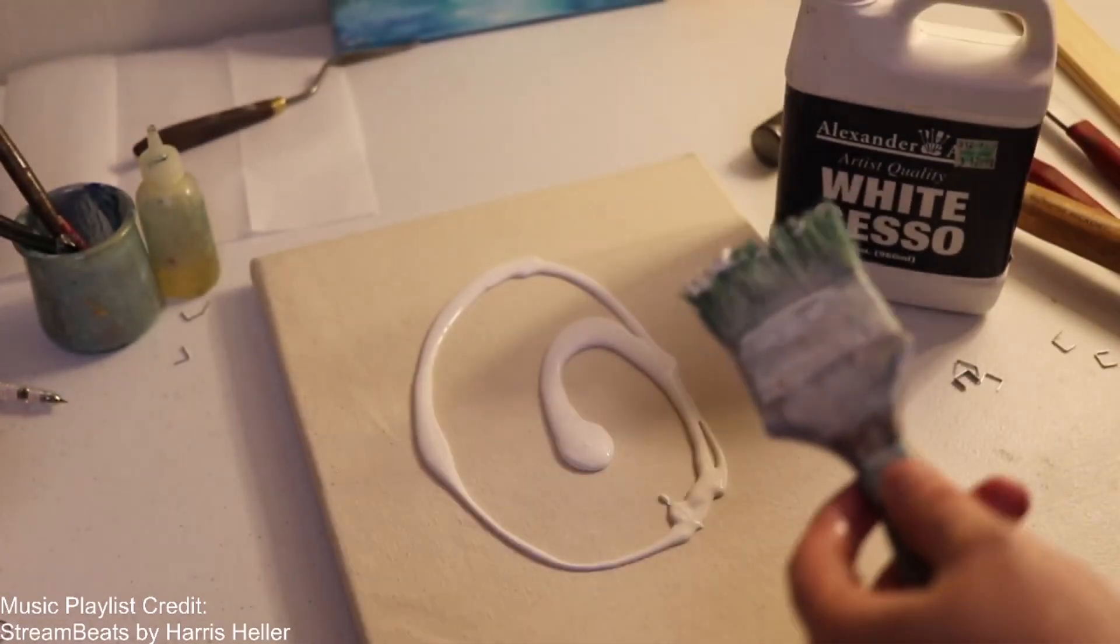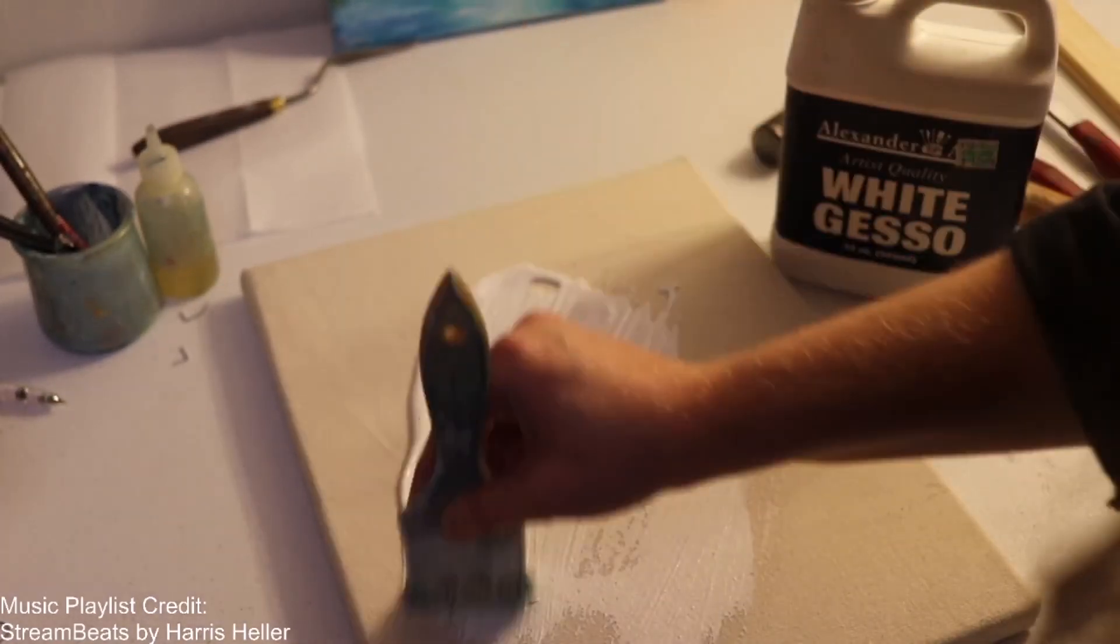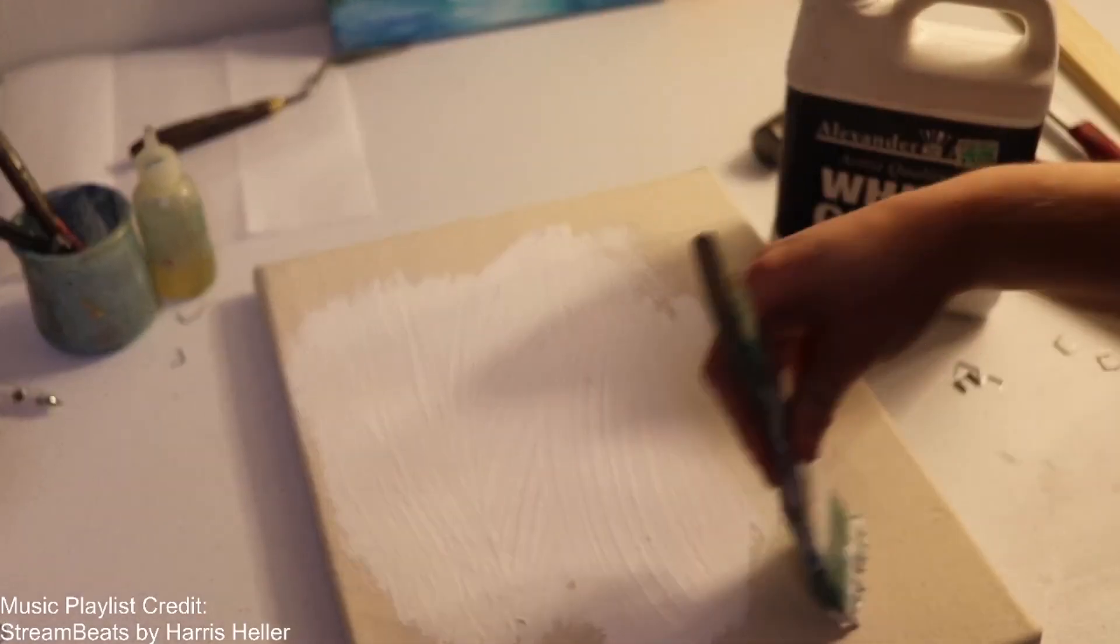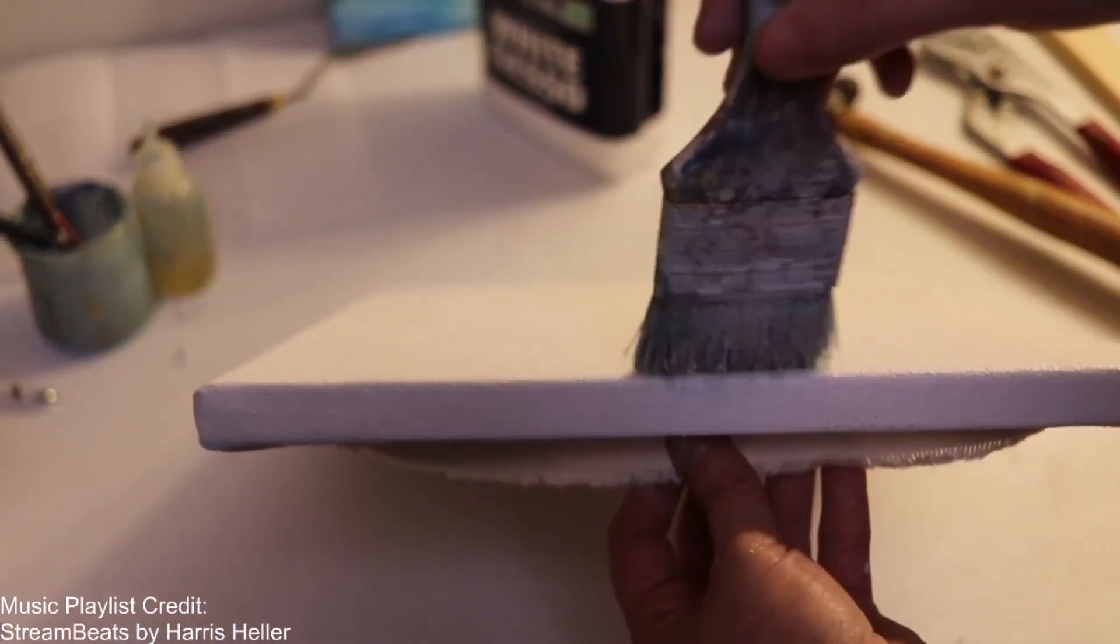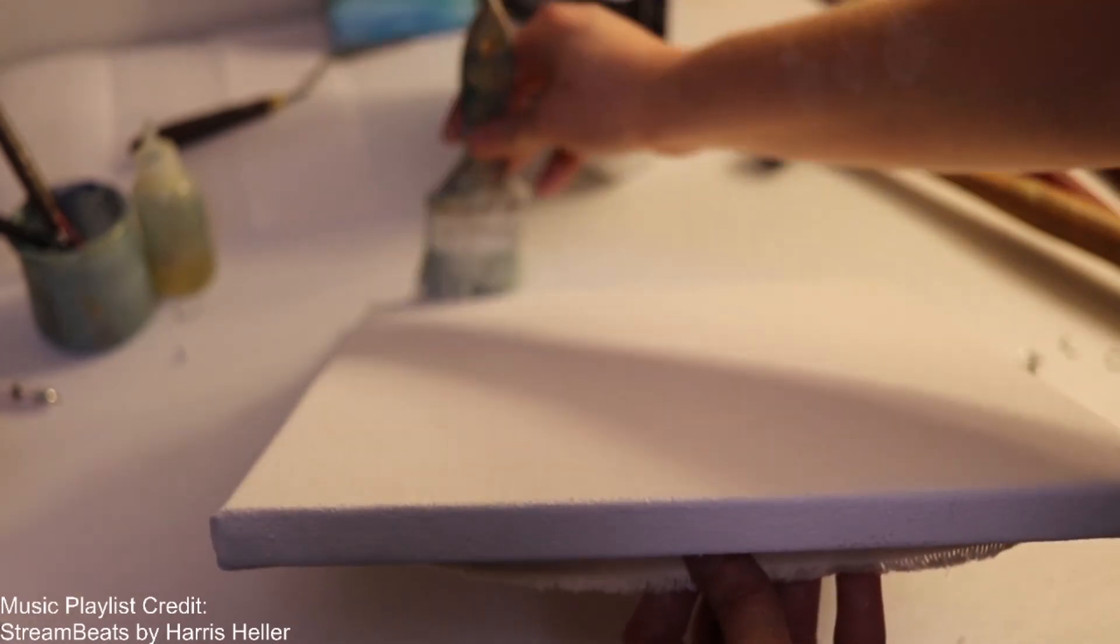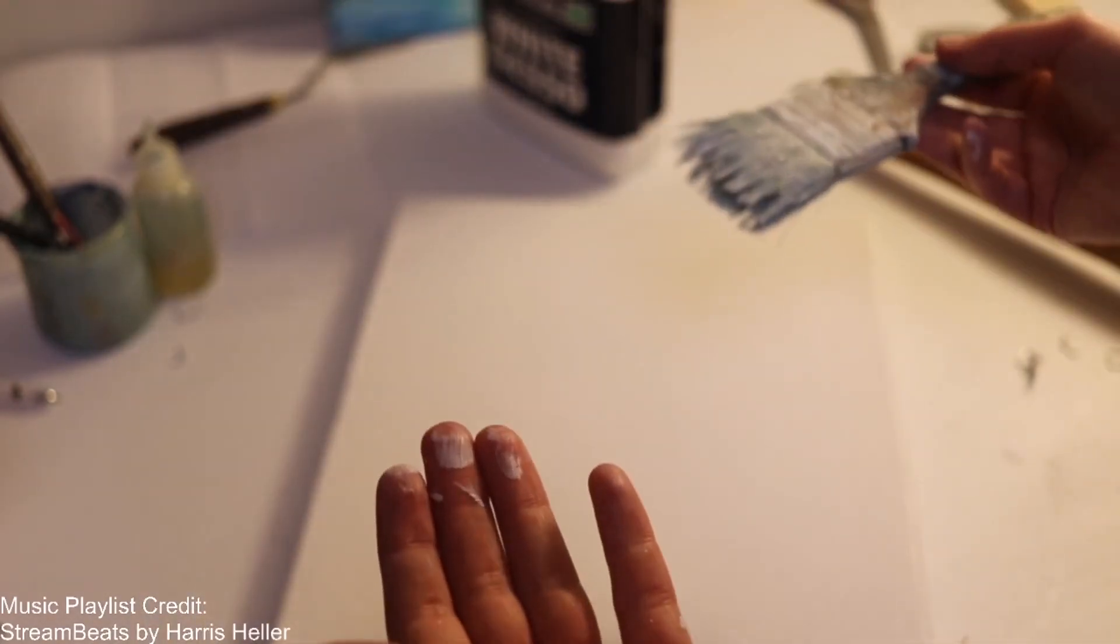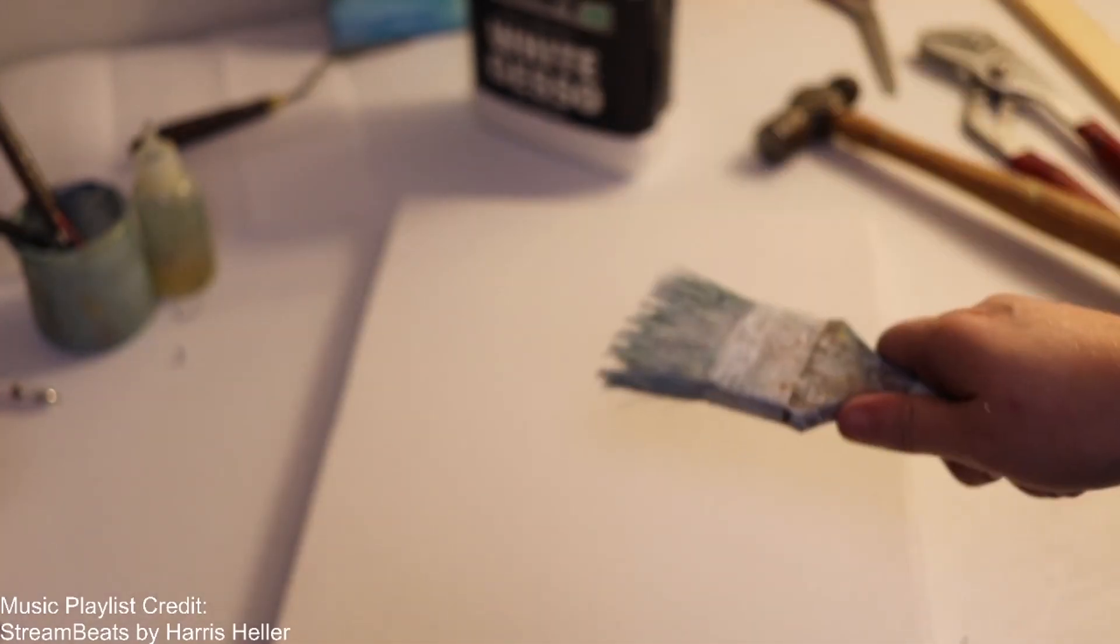Get it nice and on there. And then you just spread it around. And you'll do multiple layers of these. If you want it the absolute smoothest between layers, you sand it. That's what I was about to say. You sand it. And then once that dries, you're good for a second coat. But that is how you stretch your own canvas. Ba-da-bing, ba-da-boom.